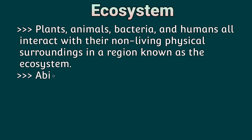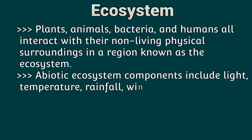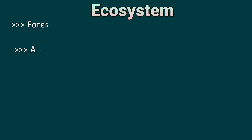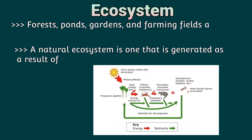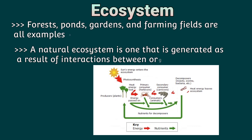Ecosystem: plants, animals, bacteria, and humans all interact with their non-living physical surroundings in a region known as the ecosystem. Abiotic ecosystem components include light, temperature, rainfall, wind, and soil. Forests, ponds, gardens, and farming fields are all examples of ecosystems.